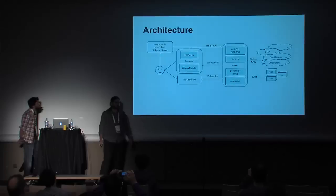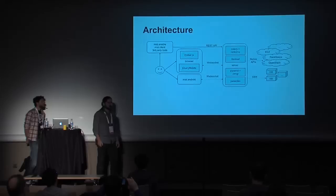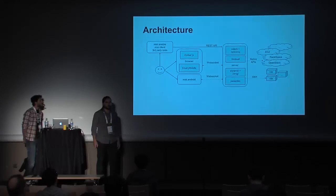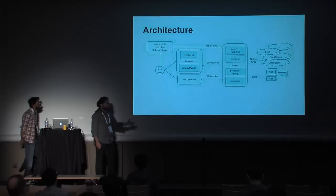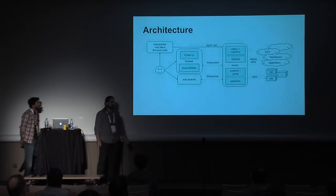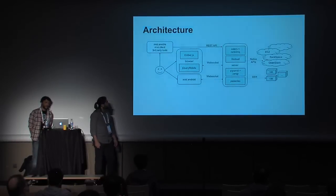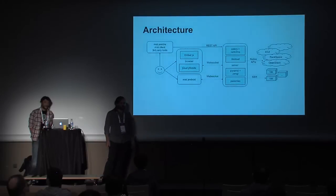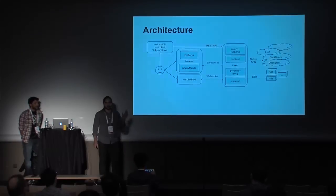Before we go for a live demo, let's look under the hood. MIST.io is a Python web application. It's built on Pyramid and is served through uWSGI. The user interacts either through an HTML5 app in the browser, or through the command line tools, or through a native Android application that's about to be released. Both the native Android app and the HTML5 app stay up to date using web sockets, while the command line tools use the RESTful API. The server queries your cloud backends using their native APIs through libcloud, a library that provides a common abstraction layer.